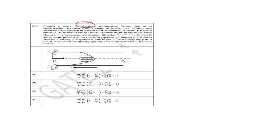The flow is driven by the combined action of a pressure gradient, and also the bottom plate is moving in the negative direction. The pressure gradient is positive; p1 and p2 are the pressures at the two locations. The bottom plate has a velocity of magnitude v with respect to the top plate at y equal to h, moving in the negative direction. We need to find the x-component velocity profile.